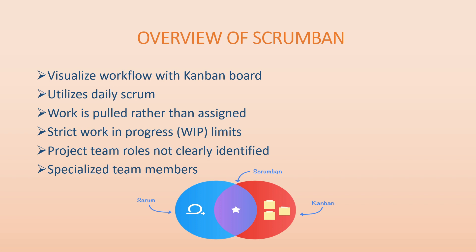Scrumban visualizes workflow with a Kanban board and utilizes daily Scrum. Work is pulled rather than assigned — as we saw in Kanban, the team member takes up work from the 'To Do' column, assigns it to themselves, and moves it to 'In Progress.' In Scrum, by contrast, the product owner assigns the work.